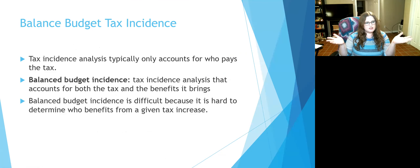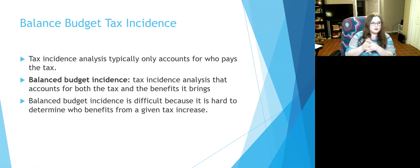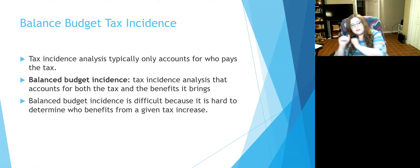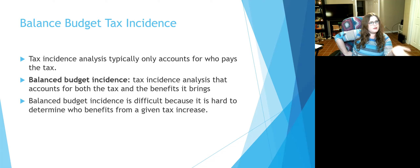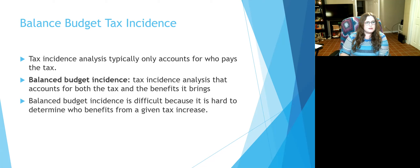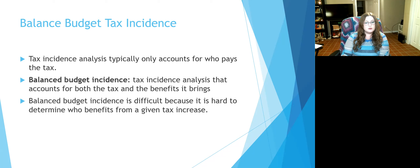We also have the idea of balanced budget tax incidence. Standard tax incidence analysis typically only accounts for who's paying the tax, but when thinking about balanced budgets, we need to account for both the tax and the benefit it brings. For example, we tax gasoline — but we're not necessarily adding in how much reduction in road damage is happening because we're fixing the roads, or how much good comes from funding new bridges and reducing traffic. We need to think about both the tax and any benefits from the tax, though it's very difficult to measure because it's hard to know exactly what the benefits of each tax increase are.